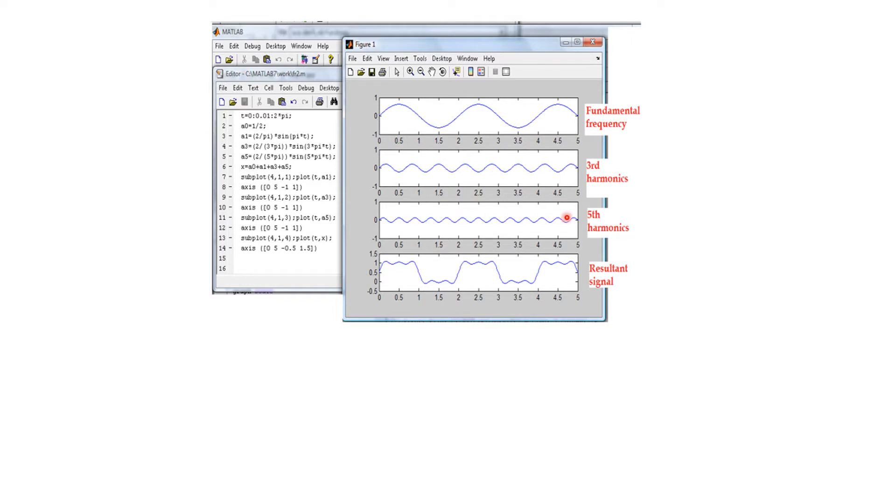And this was fifth harmonics. That is five into 50, 250 Hz. And when we added these three, then you can see there is a square wave signal coming in. This may not be perfect because I have added only three signals. When we add maybe 100 signals of different harmonics, odd harmonics, then you will get a perfect square wave signal.